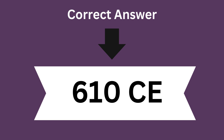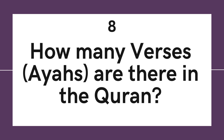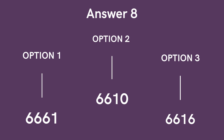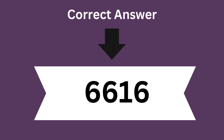Question 8: How many verses are there in the Quran? Option 1: 6,661. Option 2: 6,610. Option 3: 6,616. And the correct answer is 6,616.